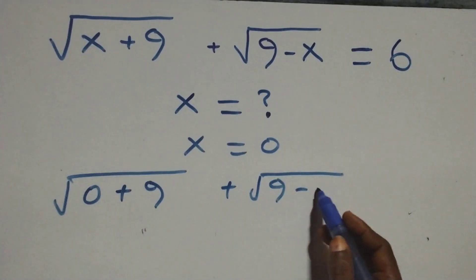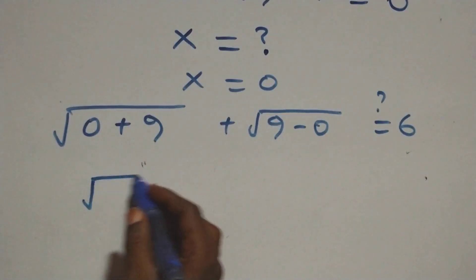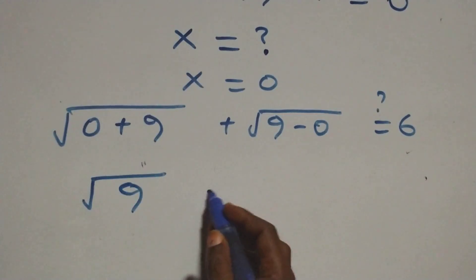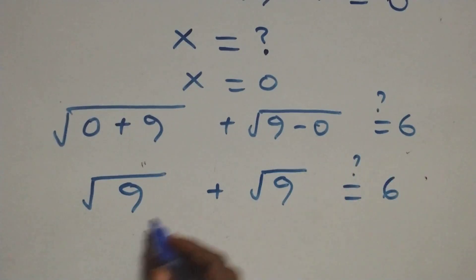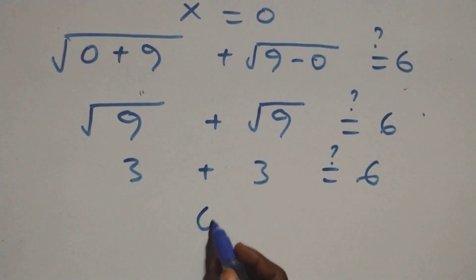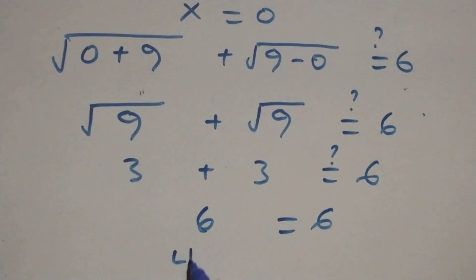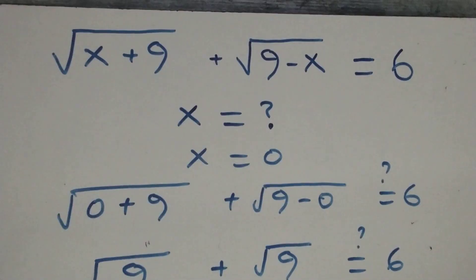This becomes square root of nine plus square root of nine, equals six. Root nine is three, plus three equals six — which equals six. So the left-hand side equals the right-hand side. Therefore x equals zero satisfies this given problem.